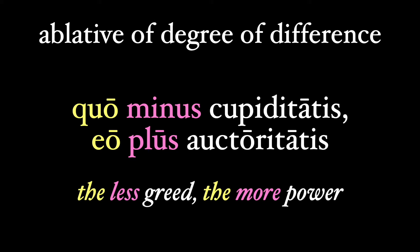Here's another one from Livy: quo minus cupiditatis, eo plus auctoritatis — the less greed, the more power. Or more literally, 'by what the less of greed, by that much the more of power.' This use of 'the' in English is kind of interesting — it's not an article, as in 'the house,' but an adverb descended from the old Anglo-Saxon instrumental case of the word for 'that.' In many ways, using 'the' here like this is a direct translation of the quo/eo.